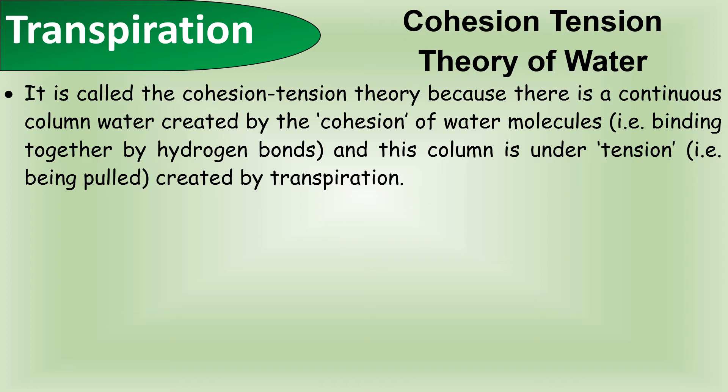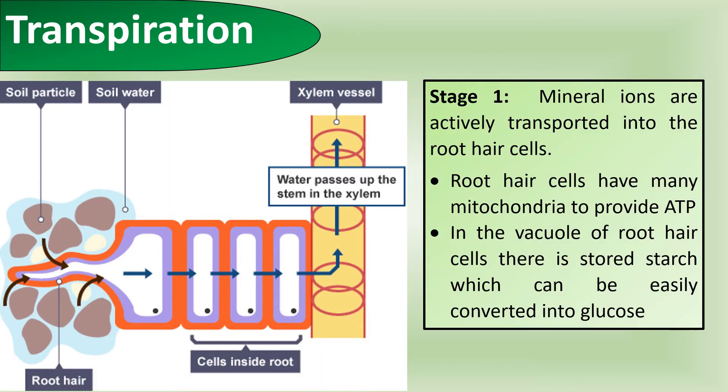When looking at transpiration where it starts in the roots, there are a series of things that we need to talk about. I'm going to go through all the stages. The first thing that happens is that mineral ions are actively transported into root hair cells. Root hair cells have many mitochondria to provide ATP. In the vacuole of root hair cells there is stored starch which can be easily converted into glucose to provide the raw material needed by the mitochondria to produce ATP.